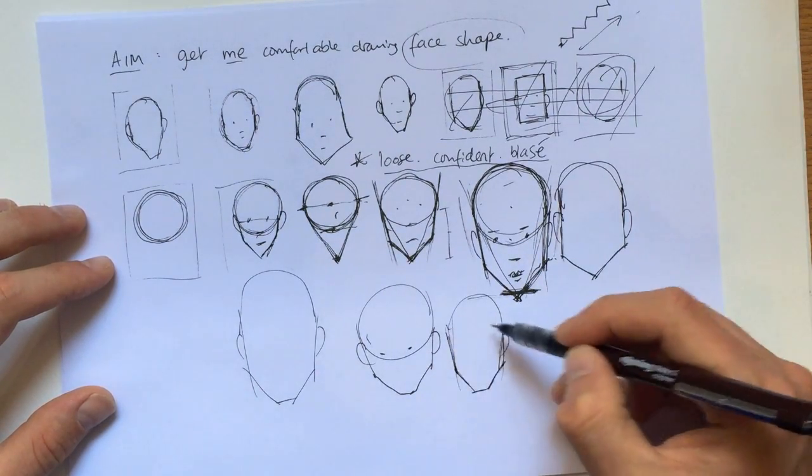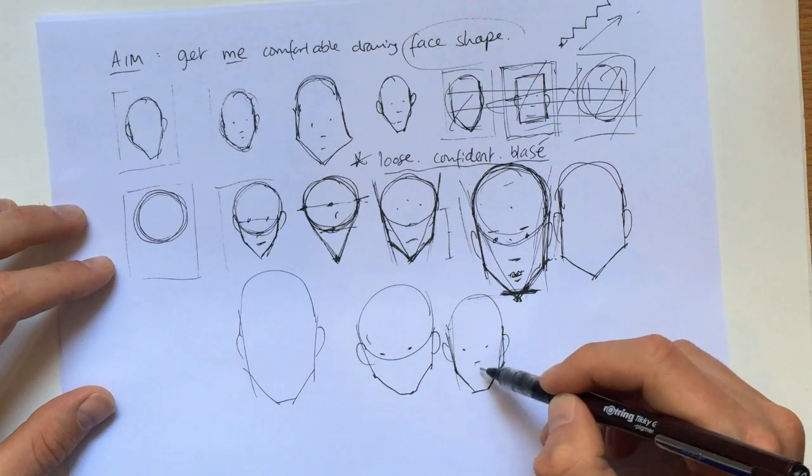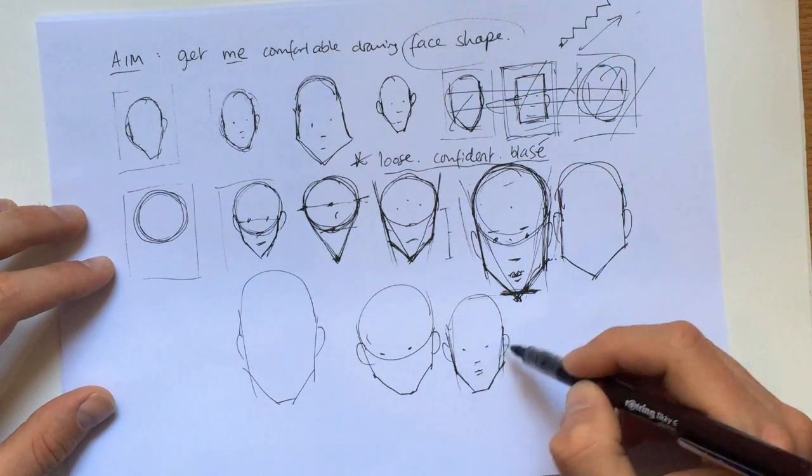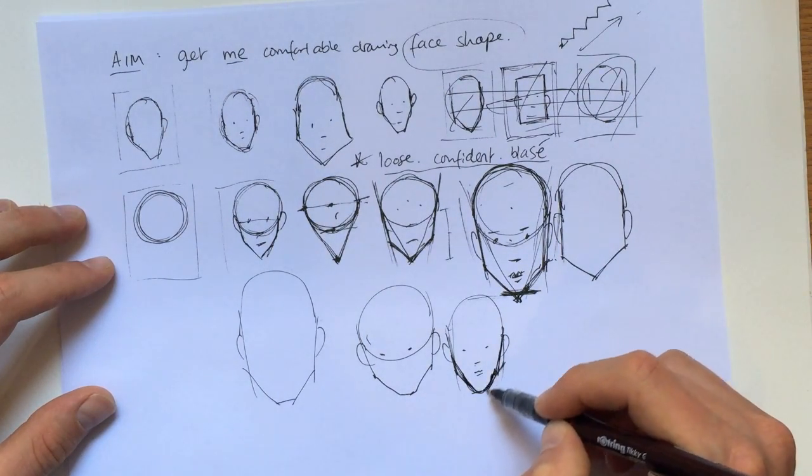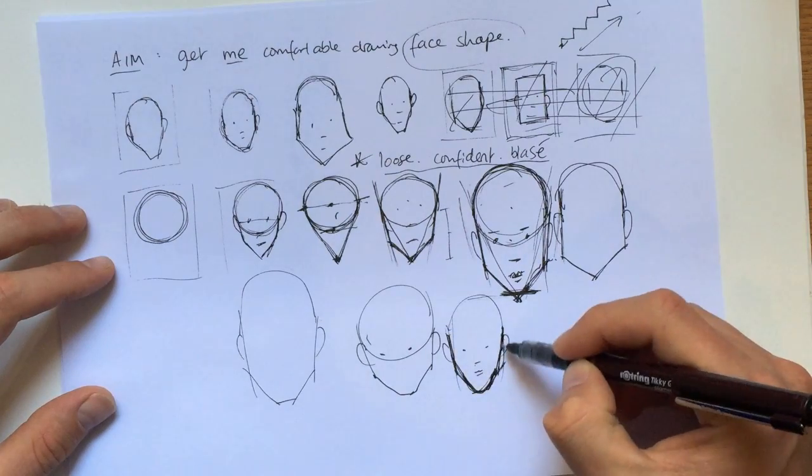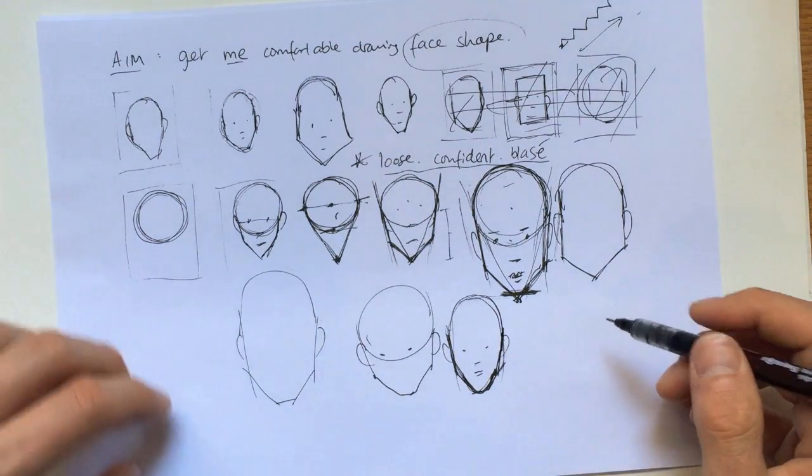And look, you can experiment. Even if you're using a pen, you can experiment with the lines. You can make them all that more angular. I want to have a round chin. This is just a starting point.